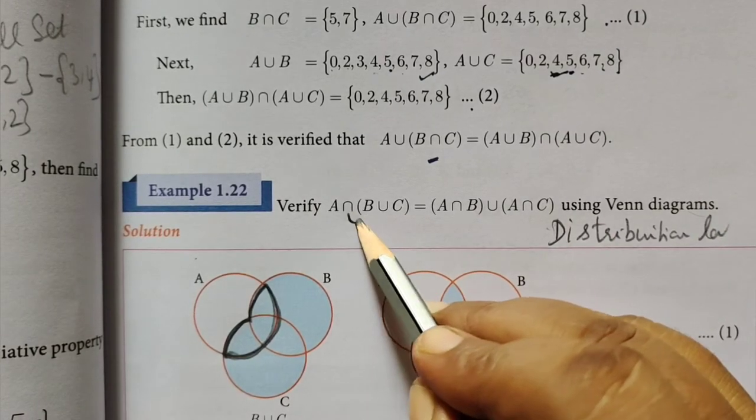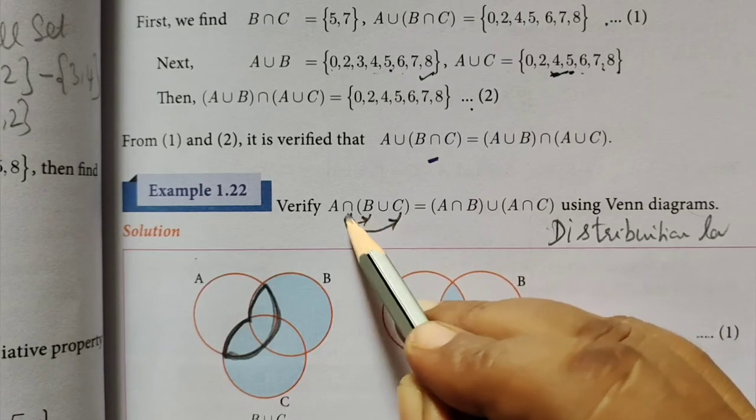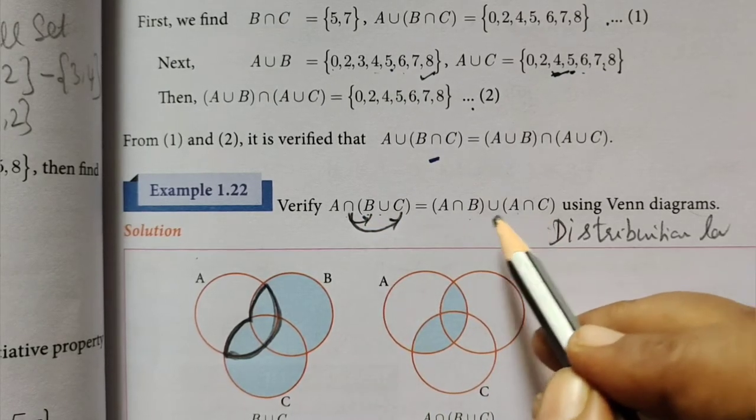That is the intersection distributes over the union. So, A intersection B union A intersection C.